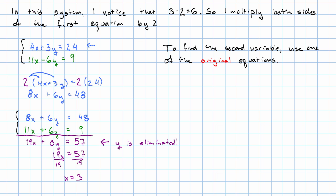So I'm just going to use the first equation. So I'll have 4 times 3 plus 3y is 24. So 12 plus 3y is 24. Subtract 12 on both sides and we get 3y is 12. Divide by 3 and we get y is 4.